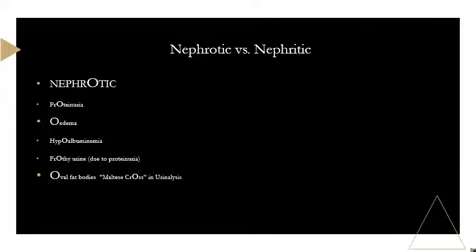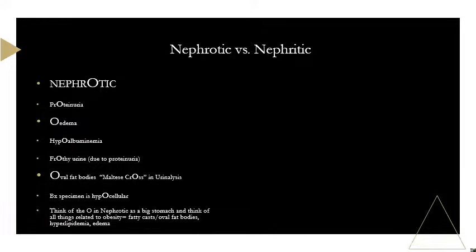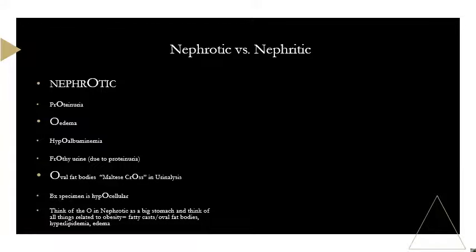Oval fat bodies, also known as Maltese cross, is something you'll see on urinalysis. If you take a biopsy specimen, it's going to be hypocellular. The other memory trick: think of the letter O as a big fat stomach — think obesity. Obesity starts with O, and you associate fatty casts, oval fat bodies, hyperlipidemia (prevalent in nephrotic syndrome), and edema. If you're obese, there's a good chance you'll have high cholesterol — same idea.